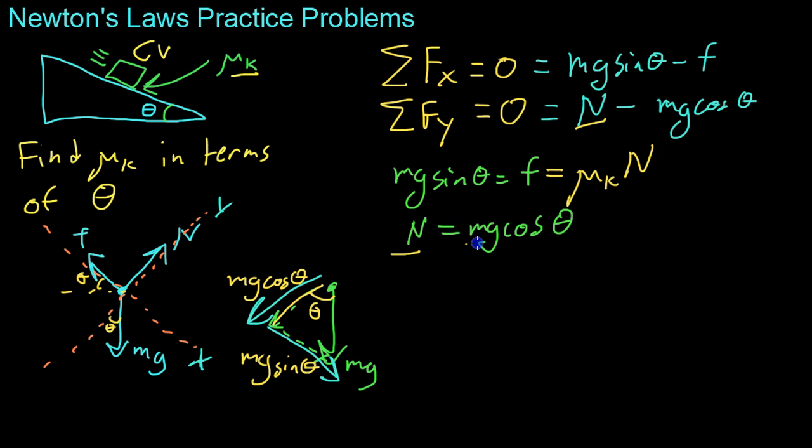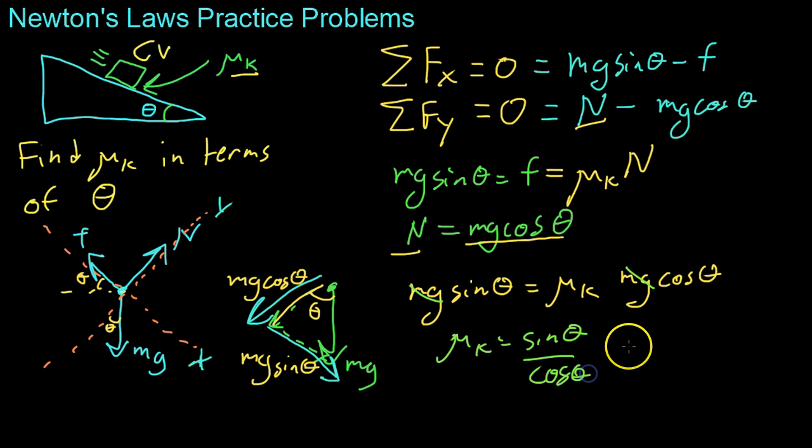And because we have a substitution for the normal force, we can get that Mg sine of theta equals mu k times this substitution for normal, which is Mg cosine of theta. We can then cancel out Mg, because they appear on both sides, and get that mu k equals sine theta over cosine theta. And from trig, we know that that is tangent of theta.